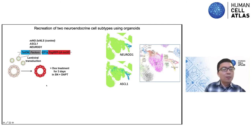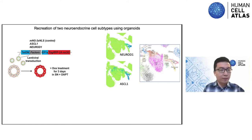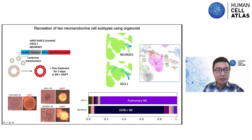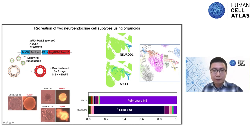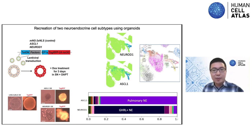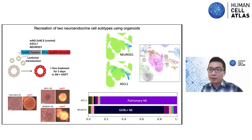We used the multipotent tip organoid cell system to overexpress these two transcription factors individually. Our preliminary results suggest that ASCL1 and NeuroD1 overexpression individually can be sufficient to push tip cells into the targeted neuroendocrine subtypes. This tells us we successfully identified two transcription factors potentially governing lineage commitment for these differentiated cell types, and we are expanding this methodology to identify more regulators for epithelial generation.